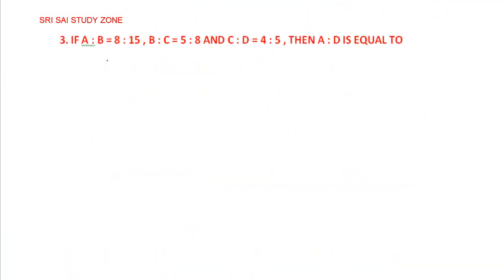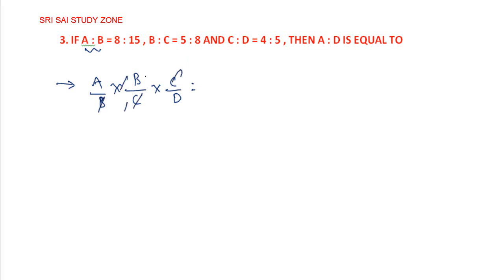If a is to b is equal to 8 is to 15, b is to c is equal to 5 is to 8, and c is to d is equal to 4 is to 5, then a is to d. We write a by b, b by c, c by d. So b cancels and c cancels, giving a by d. Therefore a is to d.